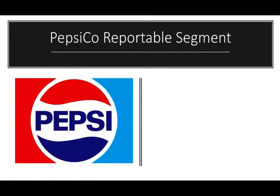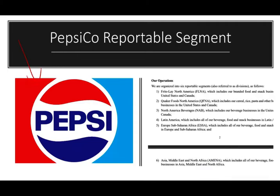We need to talk about reportable segments. When I talk about reportable segments, I want you to think about this company — PepsiCo. When you think of PepsiCo, what do you think of? I'm assuming you're thinking about beverages, soda beverages. Well, let's look at PepsiCo's annual report to see what business PepsiCo is in. PepsiCo is organized under six reportable segments — our topic for today — also referred to as divisions. They have six different divisions.